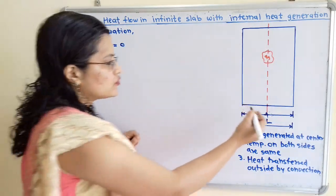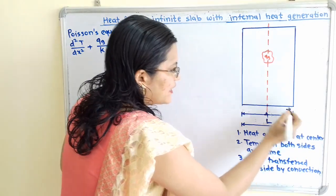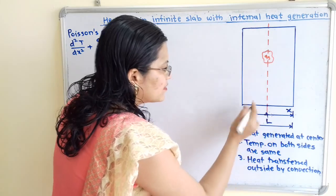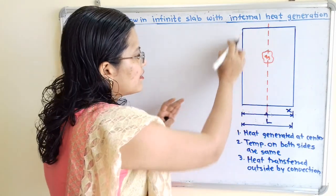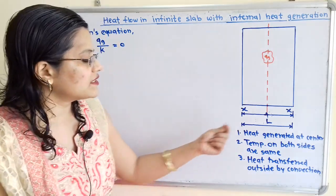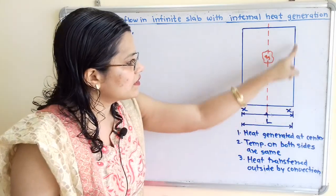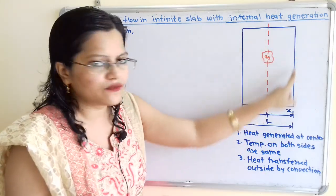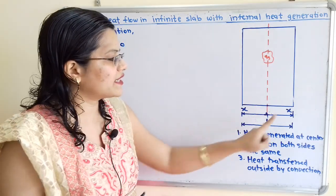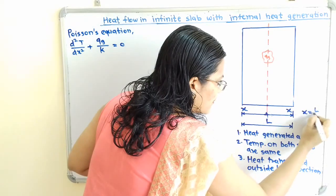We show the direction from the center: this is the first direction X where heat is getting conducted, and here is the other direction where heat is also getting conducted to the other side, also labeled X. The value of X — the distance from center towards one side and from center towards the other side — is X equal to L by 2.